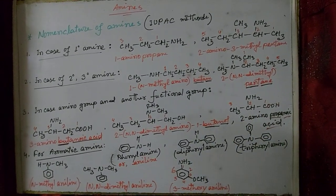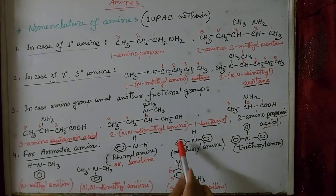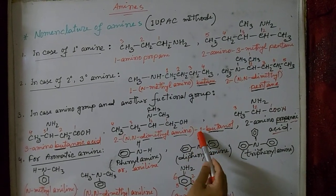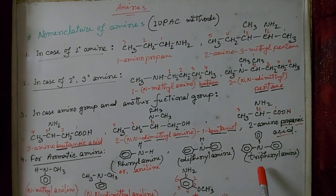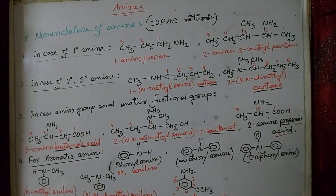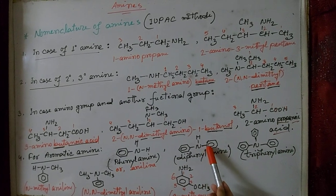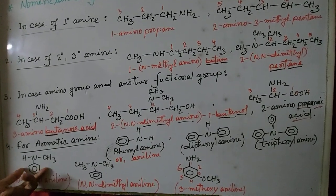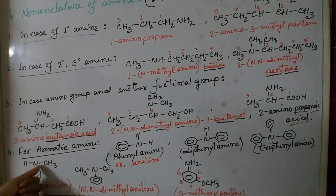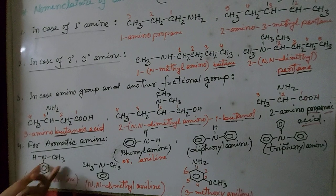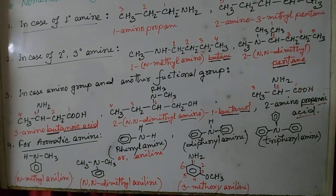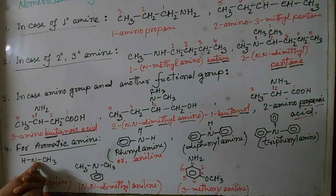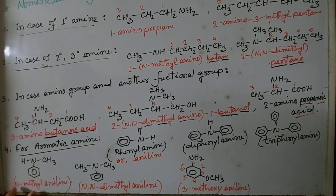For aromatic amines: phenylamine is also known as aniline. When there are two phenyl groups it is diphenylamine, and with three phenyl groups it is triphenylamine. Recall that removing one hydrogen atom from a benzene ring gives a phenyl group. N-methylaniline is a 2° amine because two hydrogen atoms of ammonia are replaced by a methyl group and a phenyl group, respectively. The methyl group is linked to nitrogen with the benzene ring, so this is N-methylaniline.